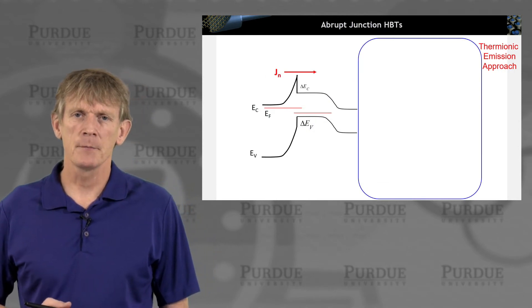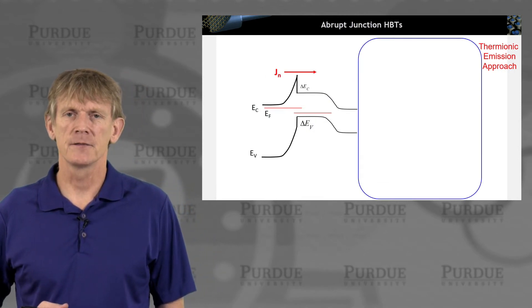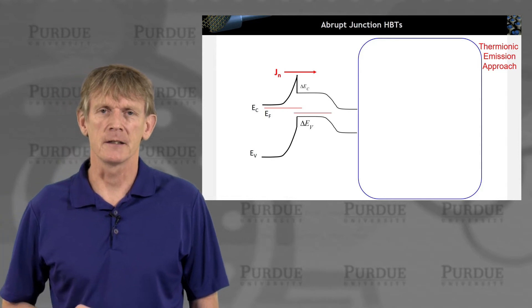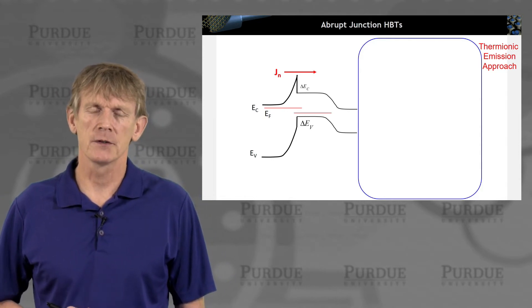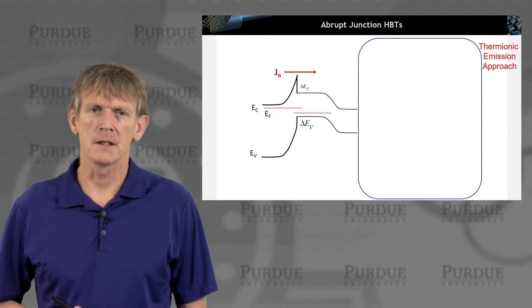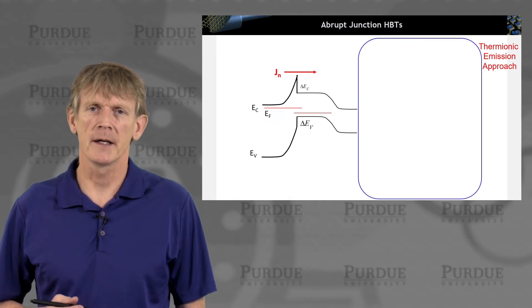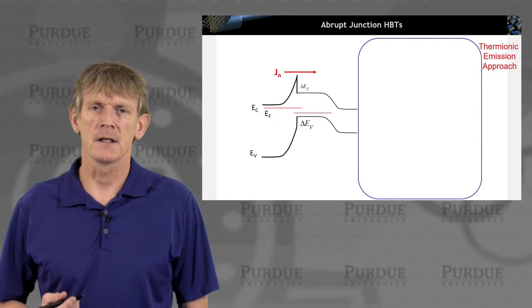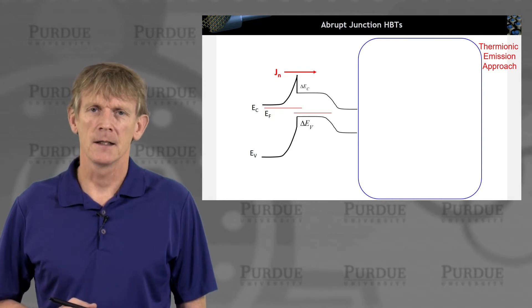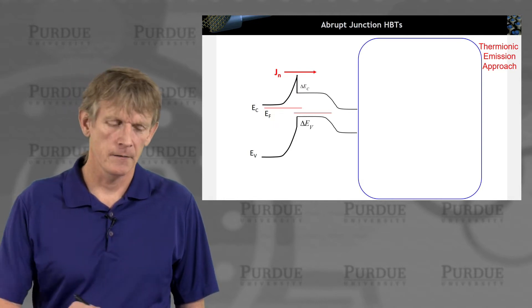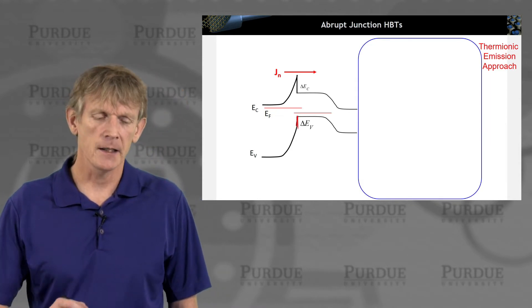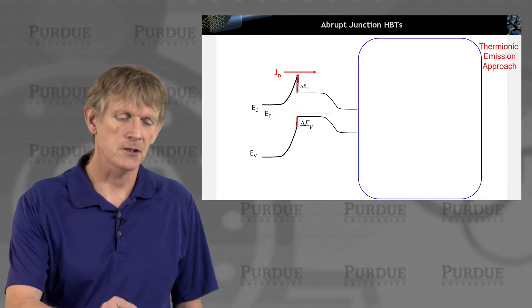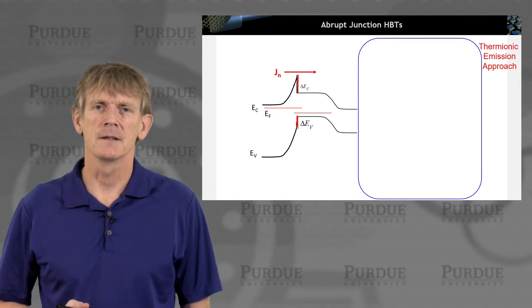Let's imagine we have the following heterostructure. Under forward bias, we have a large bandgap material on the emitter side and a smaller bandgap material on the base side. We have band offsets delta EV in the valence band and conduction band offsets delta EC as indicated here.